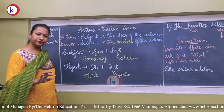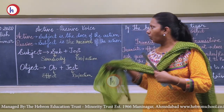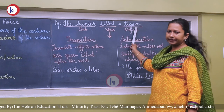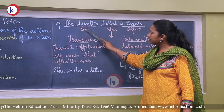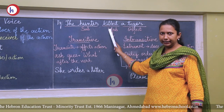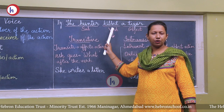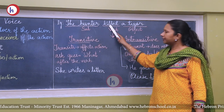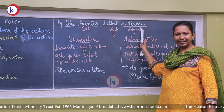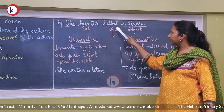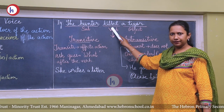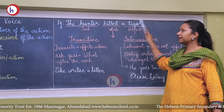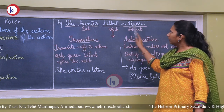Subject and object are very important parts of a sentence when changing voice. For example: 'The hunter killed a tiger.' The hunter is the subject because the hunter is doing the action of killing. Action words are called verbs. Tiger is placed at the end of the sentence — it is the receiver of the action, so tiger is the object.